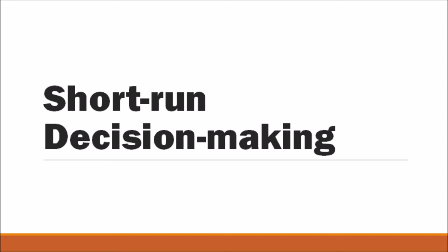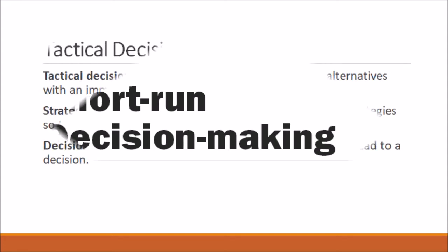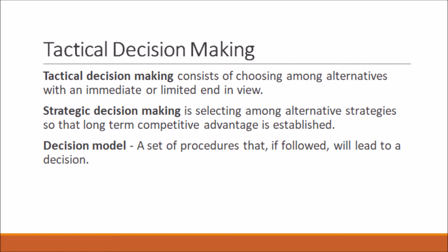First, let's define the important terms in this lesson. Tactical decision making consists of choosing among alternatives with an immediate or limited end in view. There are some tactical decisions that tend to be short-run in nature; however, short-run decisions have long-run consequences. Small-scale actions that serve a larger purpose is what tactical decision making is, and some tactical decisions achieve not only the limited objective but also serve a larger purpose.